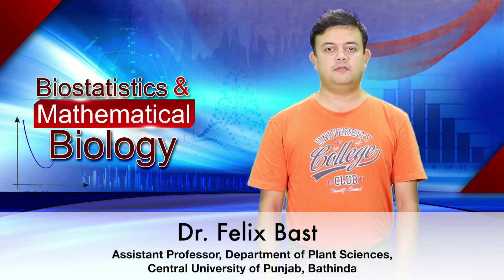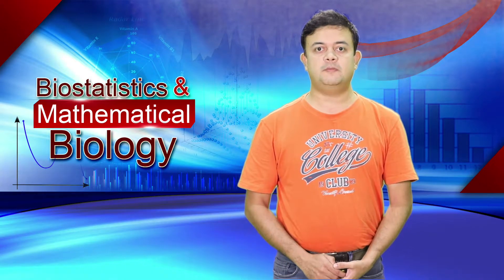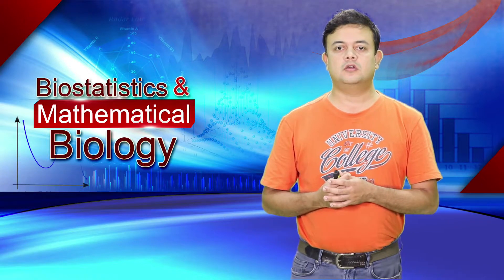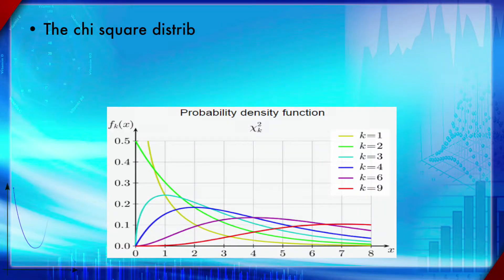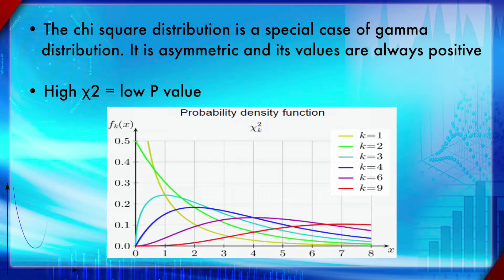Module 19: Chi-square distribution and test of significance based on chi-square distribution. Section 1: Chi-square distribution and chi-square test of independence. The chi-square distribution is one type of probability distribution for continuous data, and it is a special case of the gamma distribution. As you can see, it depends on the degree of freedom as a shape parameter.